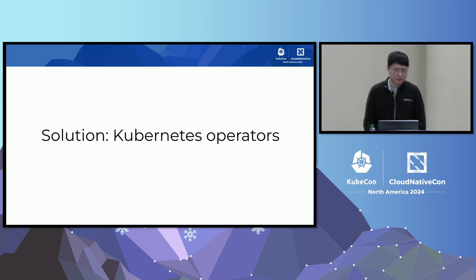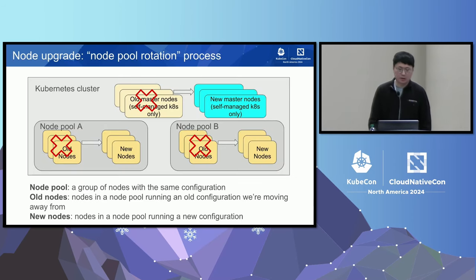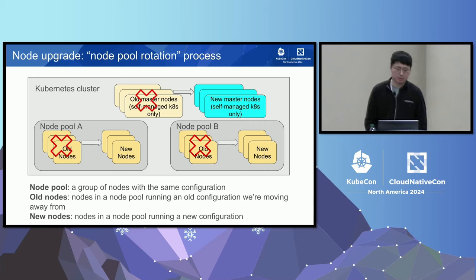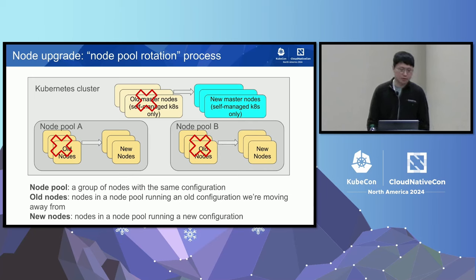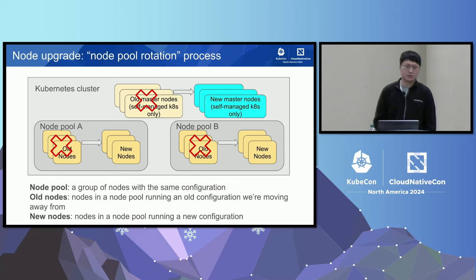After operating that system for more than a year, we finally had enough and decided to build a solution using Kubernetes operators. Our abstraction is called the node pool rotation process. In Kubernetes, we organize nodes into multiple node pools. For each node pool, we have the concepts of old and new nodes. Old nodes run a previous configuration; new nodes run the configuration we want to upgrade to. We gradually replace all old nodes in a node pool with new nodes, and we do this for every single node pool. After that, the cluster can be considered fully upgraded.